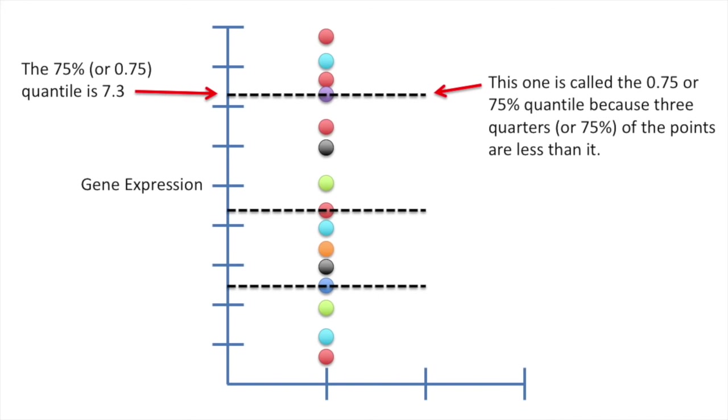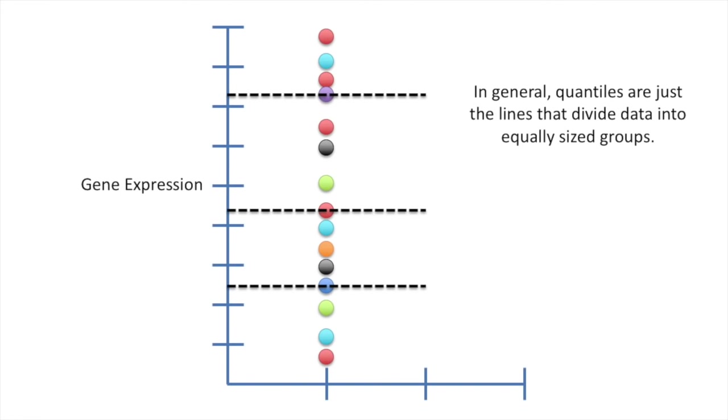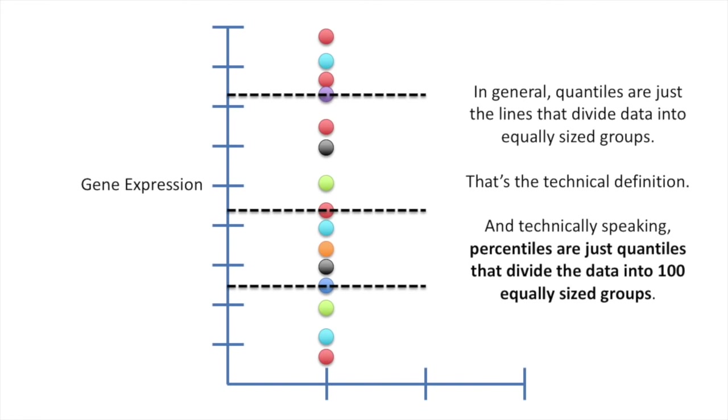The 75% or 0.75 quantile is 7.3. In general, quantiles are just the lines that divide data into equally sized groups. At least, that's the technical definition. And technically speaking, percentiles are just quantiles that divide the data into 100 equally sized groups.